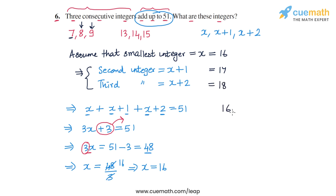So the three consecutive integers we wanted to find are 16, 17, and 18. And we can verify that this answer is correct. If we calculate the sum 16 plus 17 plus 18, we will find that this will be 51. So that completes question number six.